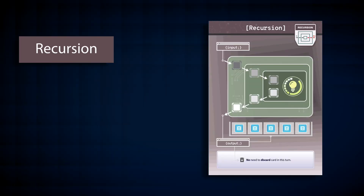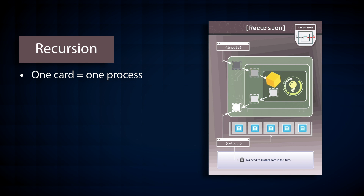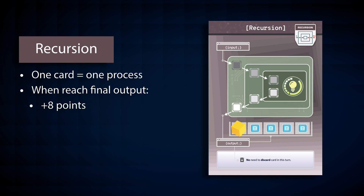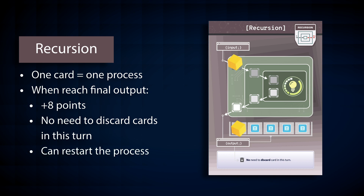Recursion. This is a recursion board. For each recursion card you play, you can run one step further in this black box. For example, if you play two recursion cards, you can move your token two steps. Once you reach the final output, you can earn 8 points immediately. Also, you can earn a bonus that you don't need to discard cards in this turn — in other words, you can keep the remaining cards in your hand. After completing the black box, you can restart the process from the beginning. You can accumulate the progress throughout the three-year game, so at the end of the year, keep all the tokens on the recursion board.